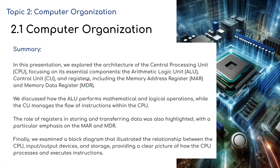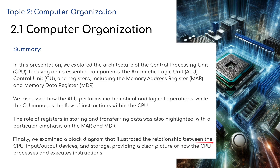To summarize: in this presentation we explored the architecture of the central processing unit (CPU), focusing on the essential components — the arithmetic logic unit, the control unit, and registers, including the MAR and the MDR. We discussed how the ALU performs mathematical and logical operations and that multiple ALUs are known as cores. A multi-core processor has multiple ALUs performing different tasks at the same time, while the control unit manages the flow of instructions within the CPU. The role of registers in storing and transferring data was highlighted with particular emphasis on the MAR and MDR. Finally, we examined a block diagram illustrating the relationship between the CPU, input and output devices, and storage, providing a clear picture of how the CPU processes and executes instructions.